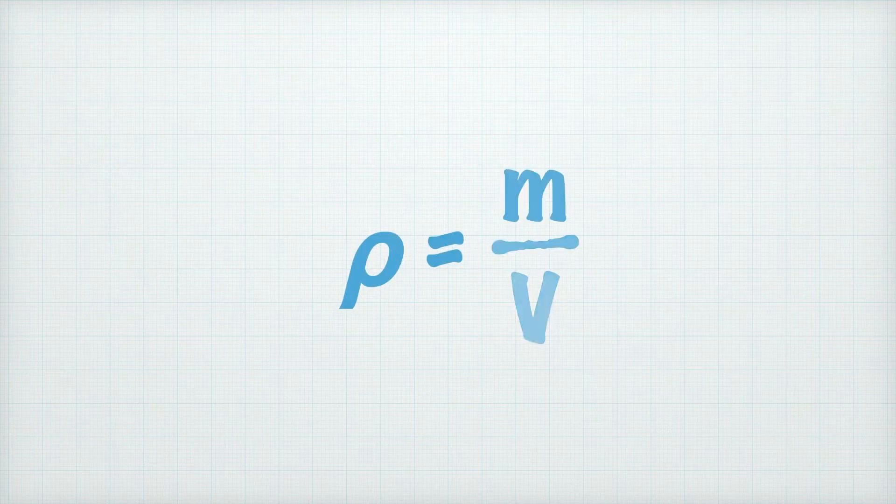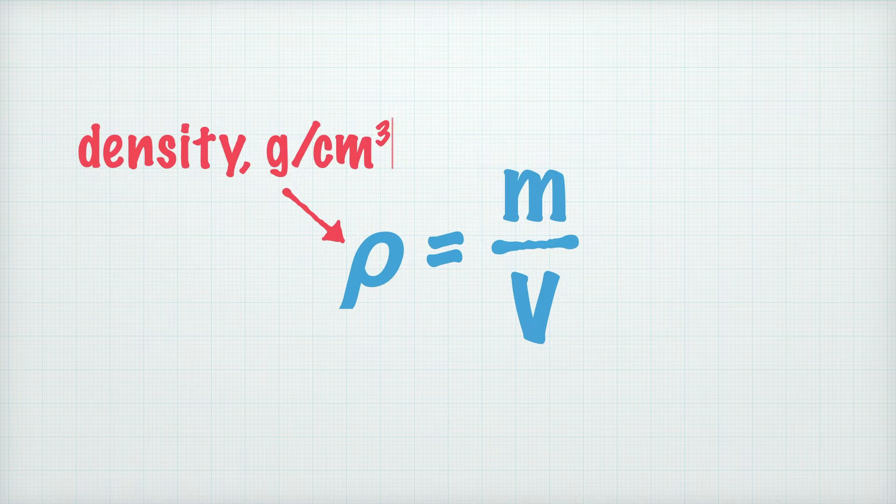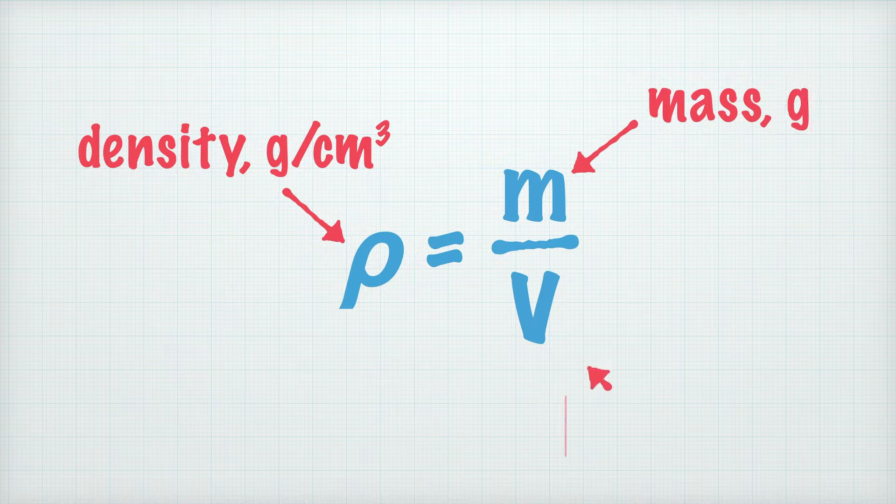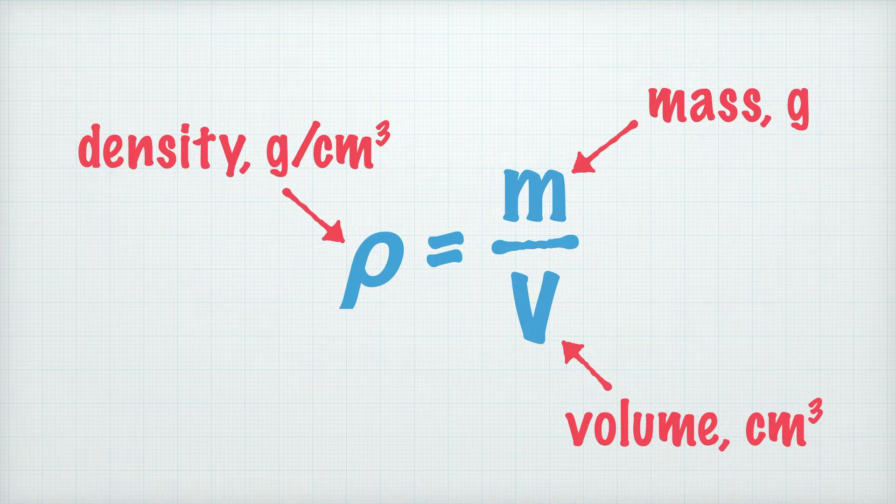The equation we use is the same as before. Density in grams per cubic centimeter is equal to mass in grams divided by volume in cubic centimeters.